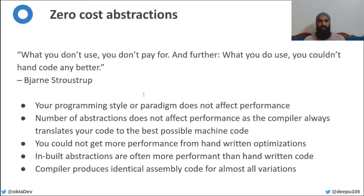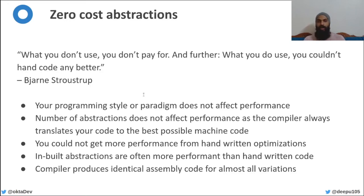My most favorite feature of Rust is hands down the zero cost abstractions. If you're a developer using a high level language like Python, Java, or Go, there's something you may not be consciously thinking about while writing those cool layers of abstraction — every one of those layers of abstraction adds additional instruction sets and affects the performance of the overall program.